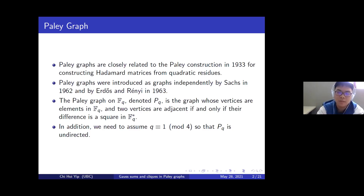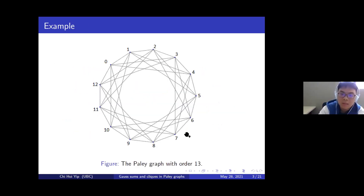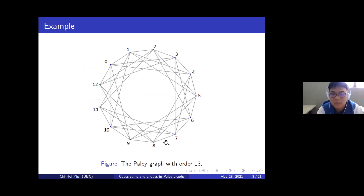Because we are interested in finding cliques in these Paley graphs, we would like the graph to be undirected, so we need to further assume that q is congruent to 1 modulo 4. Here is a nice example of a Paley graph with order 13. You can see that 1 is adjacent to 2 because 1 is a square, and 1 is not adjacent to 3 because 2 is not a square in this specific field.